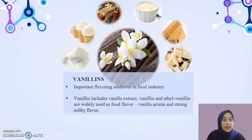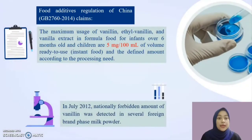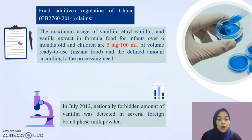Vanillins are important flavoring additives in the food industry, same goes to vanilla extract. Vanillin and ethyl vanillin are parts of vanillins that are widely used as food flavor due to their vanilla aroma and strong milky flavor. Food Additive Regulation of China claims that the maximum usage of vanillin, ethyl vanillin and vanilla extract in formula food for infants over 6 months old and children is 5 mg per 100 ml of volume ready-to-use instant food, and the defined amount according to processing need.